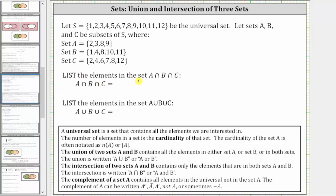We are first asked to list the elements in set A intersect B intersect C, where the intersection of two sets contains only the elements that are in both sets. Because we have the intersection of three sets, this set will contain elements in all three sets. Looking at the three sets, the only element in all three is eight, so A intersect B intersect C is the set containing just the element eight.